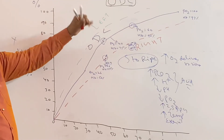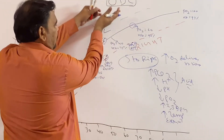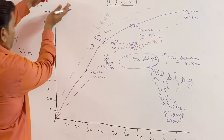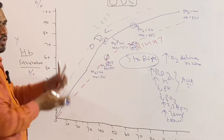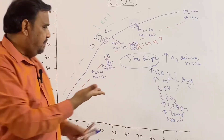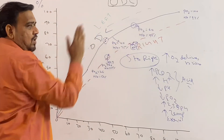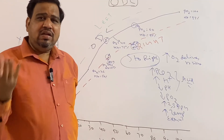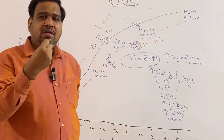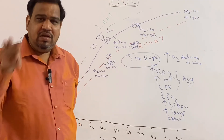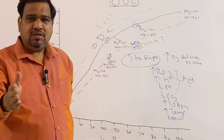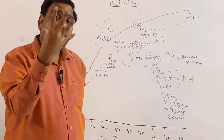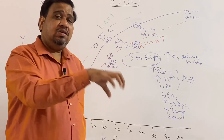Shift to left means the curve moves upward. When the curve shifts to left, hemoglobin saturation increases — for example from 70% to 90%. This means more oxygen binding to hemoglobin, but less oxygen is delivered to tissues. So to summarize: shift to right means more oxygen delivered to tissues; shift to left means more oxygen binding to hemoglobin but less delivery to tissues.